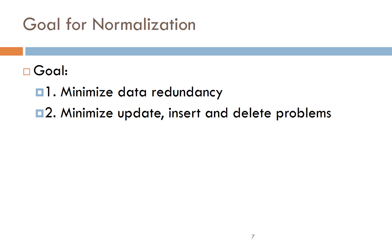The goal of normalization is to minimize data redundancy — redundancy means duplication. In databases, duplication of data creates problems in insert operations and wastes memory. Applying normalization reduces or minimizes data redundancy. It also minimizes update, insert, and delete anomaly problems. After applying normalization, it reduces these kinds of problems.